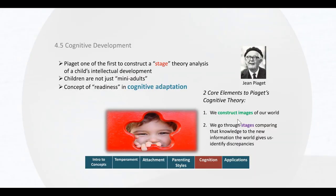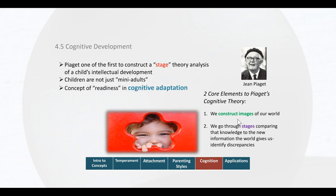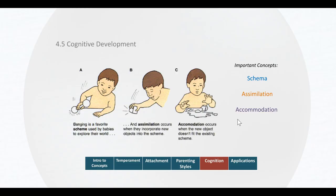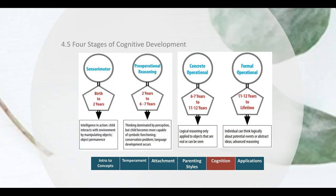The key question that Jean Piaget asks about development is how children think differently as they grow older. The way children think can be understood by how they organize the world into mental representations called schemas, and those representations are going to be expanded or changed. Assimilation is when you continue to use the same schema for new events, and accommodation is when you dramatically change the schema or create a brand new one. Piaget developed four stages of cognitive development called sensorimotor, pre-operational, concrete operational, and formal operational.